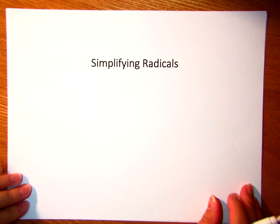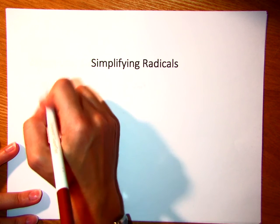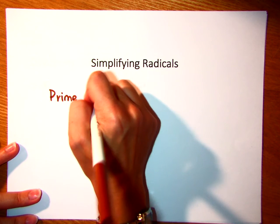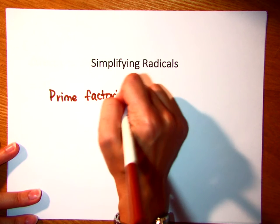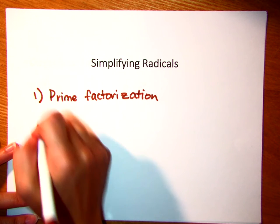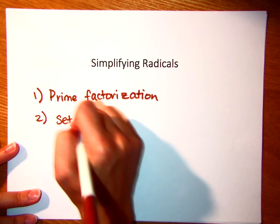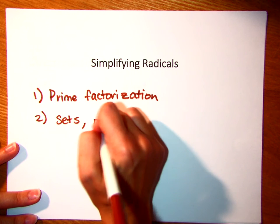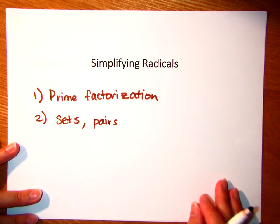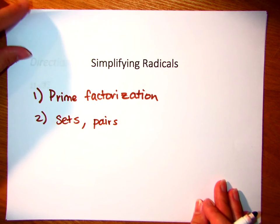This lesson is on simplifying radicals. When you simplify radicals, you want to make sure that you do the prime factorization. That's number one. And then what you're looking for are sets or pairs. So depending on what the root is, if it's a square root, you're looking for sets of two. If it's a cube root, you're looking for sets of three that you can take out, and you only get to keep one.